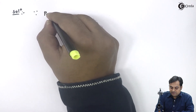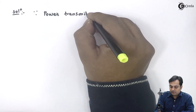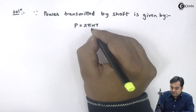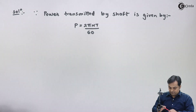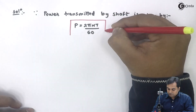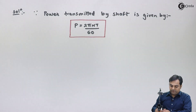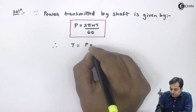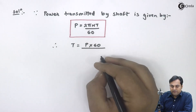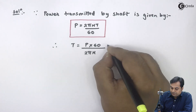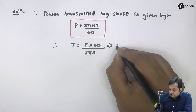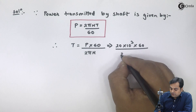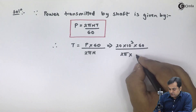Since power transmitted by the shaft is given by P = 2πnT/60, therefore T = P × 60 / (2πn). Power is 20 × 10³ watts and n is 120 RPM.